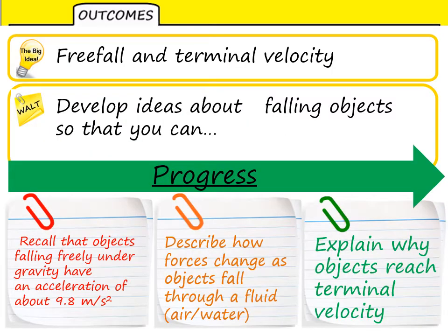Today we'll look at the idea of falling objects under constant acceleration, and the ideas of free fall and terminal velocity associated with this. We will look at the acceleration of such objects under gravity, and describe how forces on the objects change as they fall through a fluid such as air or water, and hopefully explain why objects reach terminal velocity.